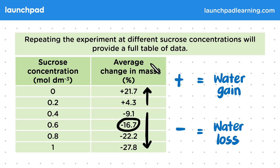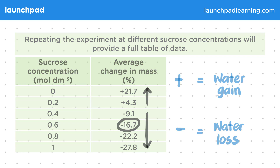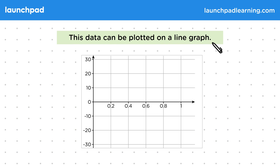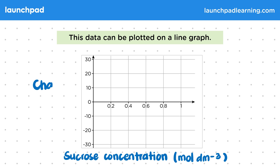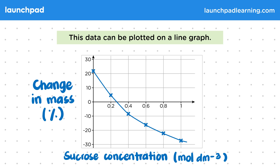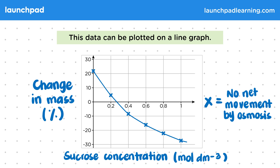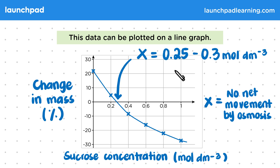Let's have a look at what these values look like on a graph. This data can be plotted on a line graph. On the x-axis we have sucrose concentration in moles per decimetre cubed, and the y-axis shows change in mass as a percentage. As the sucrose concentration increases, the change in mass decreases. At a certain point there is no net movement by osmosis — this falls within the range of 0.25 to 0.3 moles per decimetre cubed. Therefore, this is the concentration where the solution equals the concentration of the potato cell, and no net movement occurs.